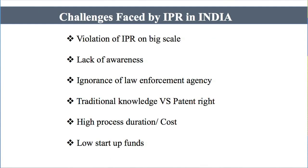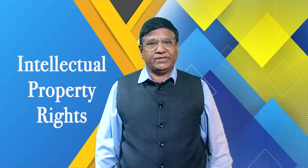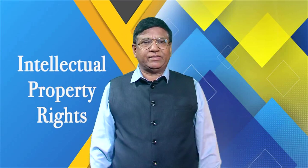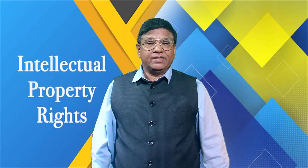Another problem in India is lack of awareness. People are not aware that intellectual property rights exist or that they have their own intellectual property rights. They don't know what legal mechanisms can support and protect their IPR. There is also ignorance about law enforcement agencies — they don't know whom to approach or how to lodge a complaint. Another major issue is traditional knowledge versus patent rights: there were attempts by US firms to patent Basmati and turmeric, but India resisted and approached WIPO to block those attempts.